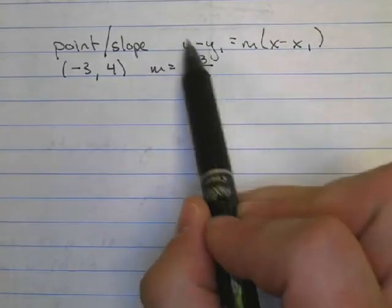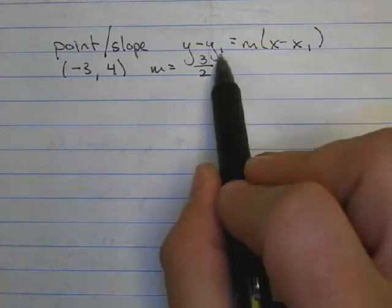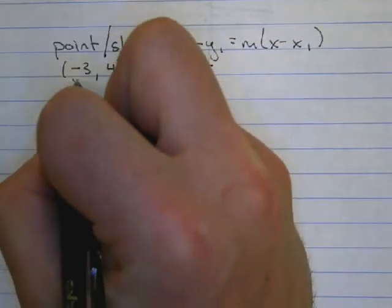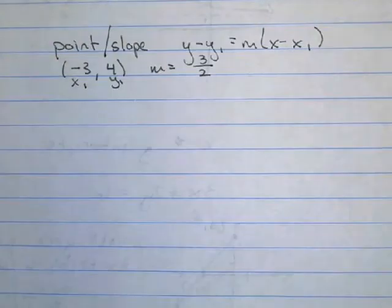Now remember, this y right here and this x right here will stay the variables y and x. We're not going to substitute numbers in for those. We're just going to substitute in for our y₁, our x₁, and our m. So we're looking at our point, negative 3, 4, and negative 3 is my x₁, and the y₁ will be the 4.